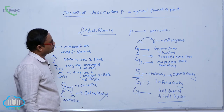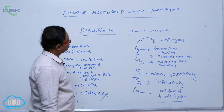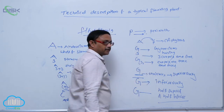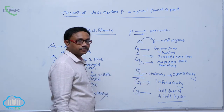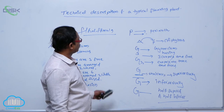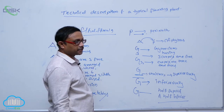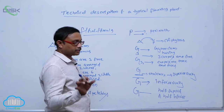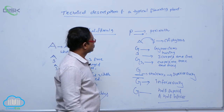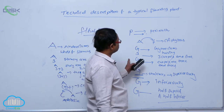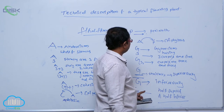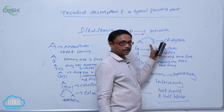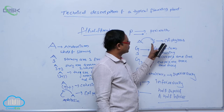P means perianth. If sepals and petals are not differentiated and appear similar, that is known as the perianth. If stamens are attached to the perianth, that is known as the epiphyllous condition.